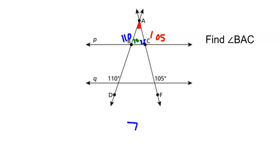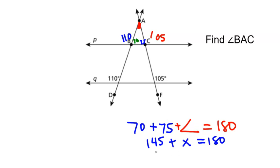And I know that 70 degrees plus 75 degrees plus that missing red angle have to make 180, because they're a triangle. So 145 plus that missing angle is 180 degrees. And when I subtract 145 from both sides, I get 35. That makes angle BAC equal to 35 degrees.